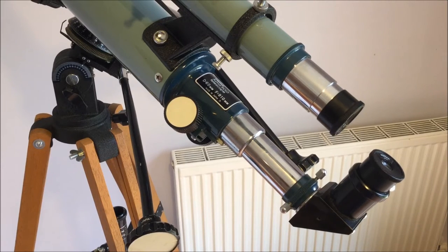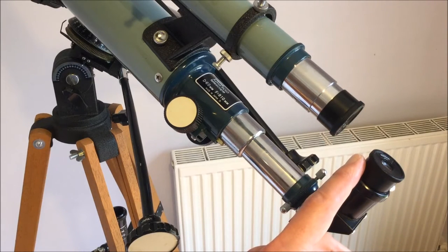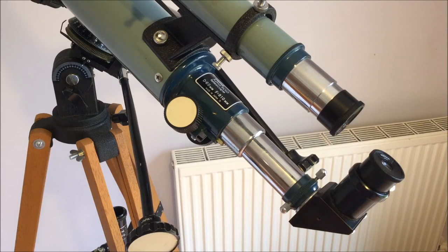OK, so starting at the eyepiece end, you'll see that the scope came with a star diagonal and came with three eyepieces. And they were 0.965 inch size, the standard for the day.